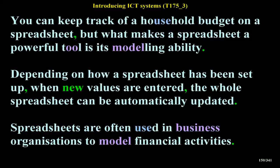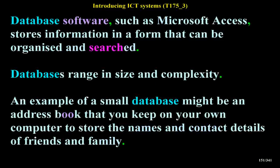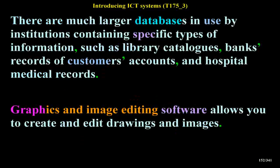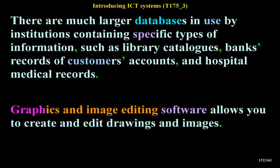Spreadsheets are often used in business organizations to model financial activities. Database software, such as Microsoft Access, stores information in a form that can be organized and searched. Databases range in size and complexity — an example of a small database might be an address book that you keep on your computer. There are much larger databases in use by institutions containing specific types of information, such as library catalogs, banks' records of customers' accounts, and hospital medical records.